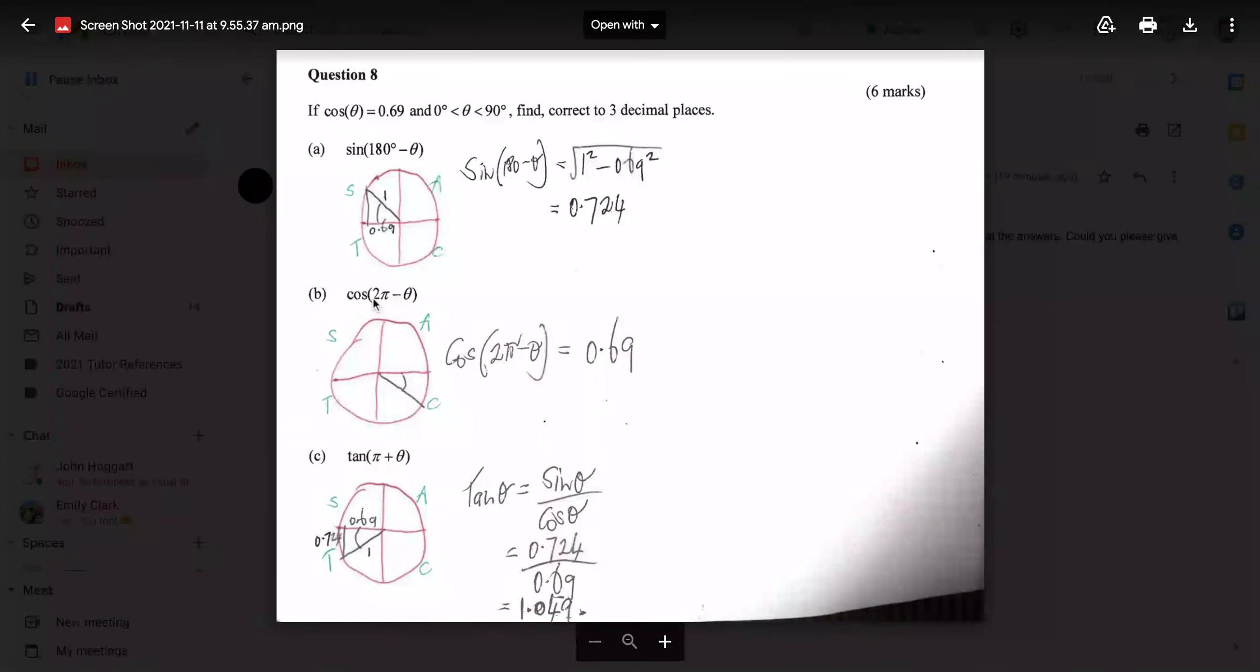This one here, cos 2 pi minus theta, they've put it in terms of radians, but it's no dramas. We know that 2 pi is 360. So that means that we're going to go all the way around to 360, and then we're going to go back theta. So we've got an angle of theta here, and it's landed in this quadrant here where cosine is positive based on our cast diagram. So cos of 2 pi minus theta is the same as cos of theta, and it's positive cos theta because it's in this quadrant. And therefore, it's just equal to 0.69.